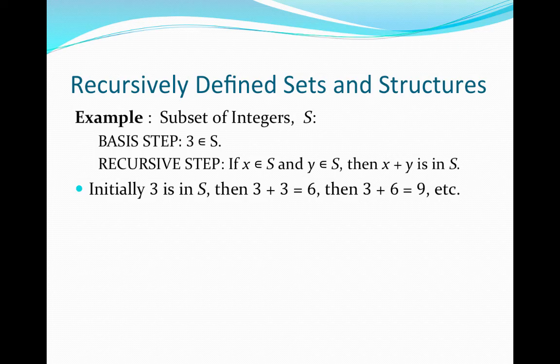What does our set look like? Initially, 3 is an element of our set S, and the recursive step tells us we can only add elements of S together. Since 3 is our only initial element in S, we must add 3 to itself to generate a new element. If we add 3 plus 3, we get 6, and now 6 is an element of our set S by the recursive step.